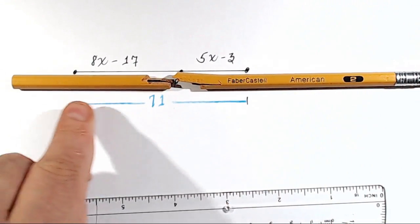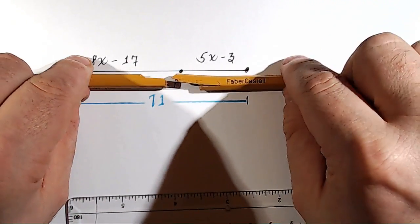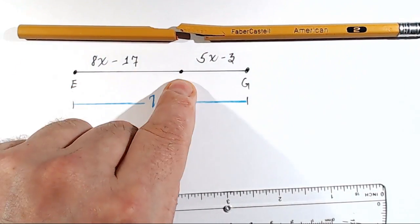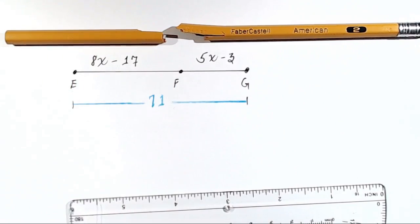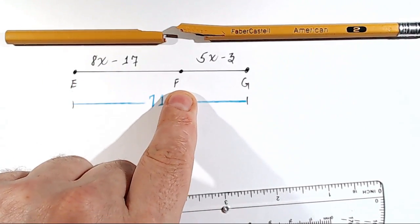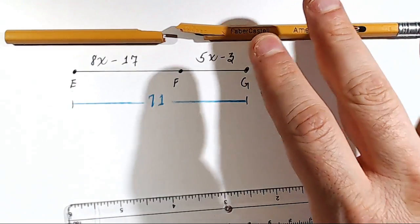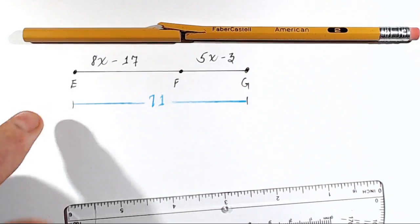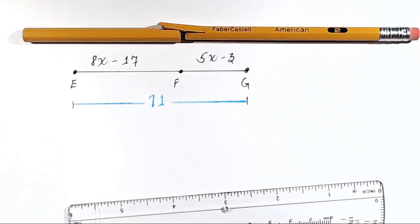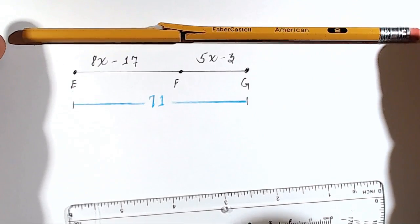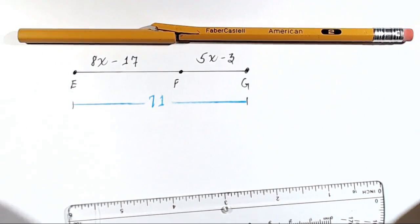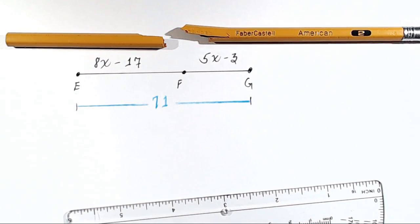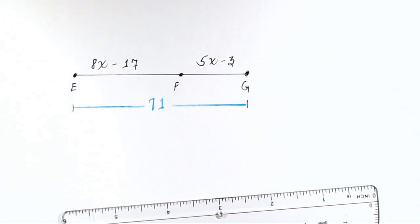Separated, you have two segments. This little piece right here represents E to F, and this piece right here is F to G. When you put them together, you have all the way from E to G. So imagine that the pencil is 71 units long — we need to find out what each individual segment length is. And to do that, we have to find X.